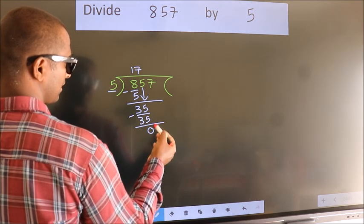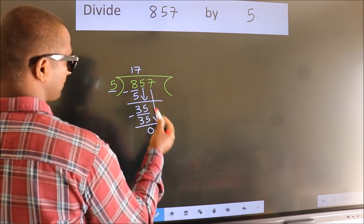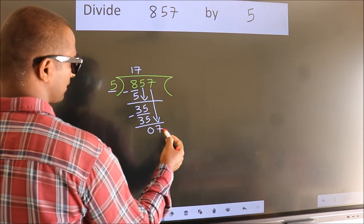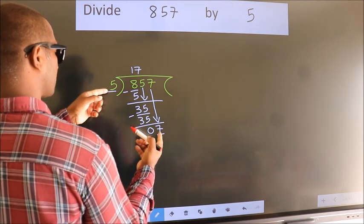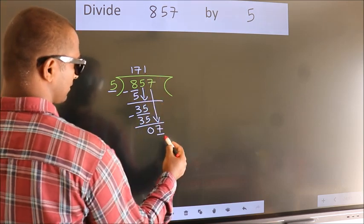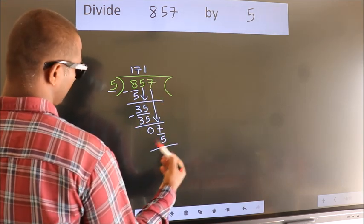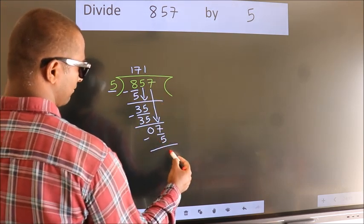After this, bring down the beside number. So 7 down, so 7. A number close to 7 in 5 table is 5 once 5. Now we subtract. We get 2.